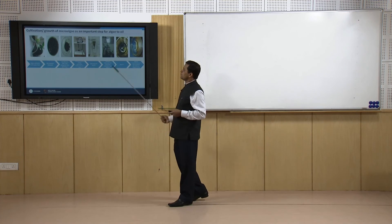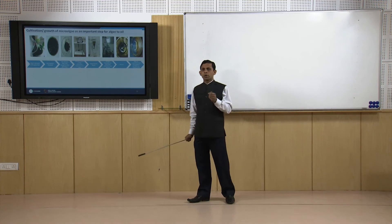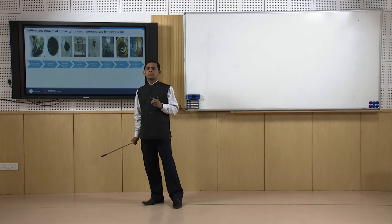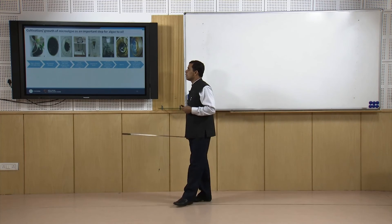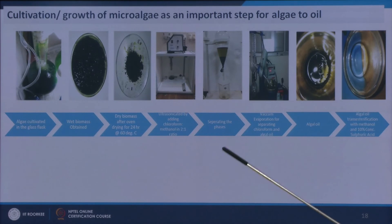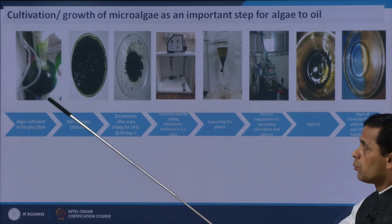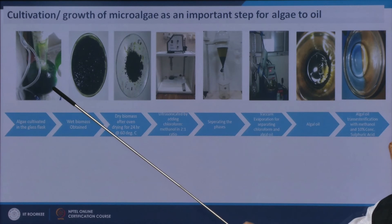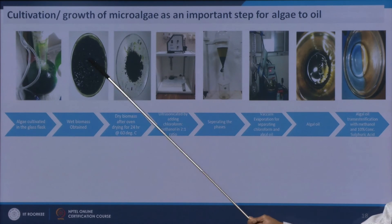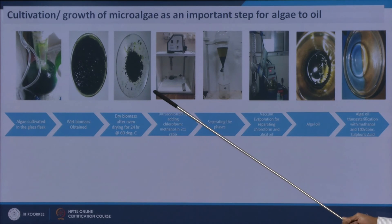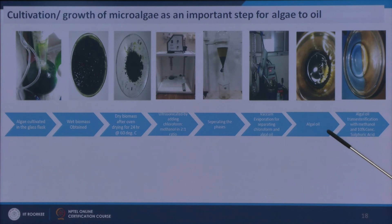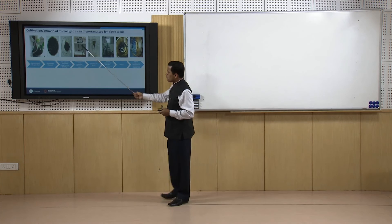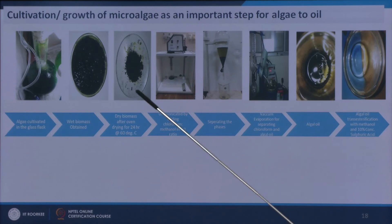Now we will see how microalgae can be grown, the biomass separated, used to produce algal oil, and how algal oil can be converted to biodiesel. The complete process on this slide is: grow microalgal cells → separate the biomass → obtain wet biomass → dry to get dry biomass → extract oil → separate solvent and algal oil → convert algal oil to biodiesel. This module is dedicated to discussing up to the algal oil stage.